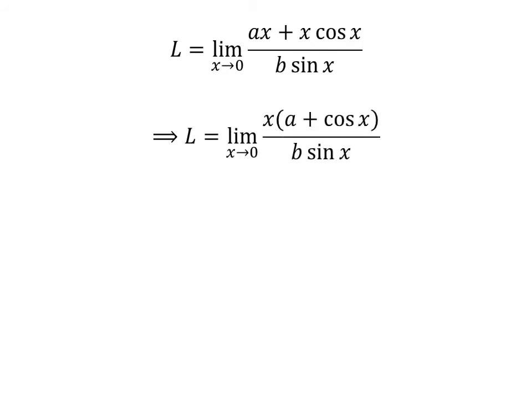Let us take out the common factor x in the numerator of the limit. As multiplying the numerator and denominator of a fraction by a common factor does not change the value of the fraction, let us multiply the numerator and denominator by 1/x.